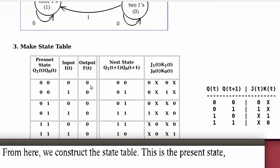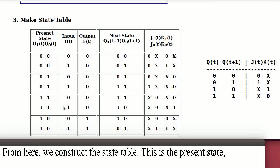The output only depends on the state, not the input. For state 11, the output is 0. For state 10, the output is 1. The next state depends on the input. So we set up the state table and now need to fill out the entries for J1(t), K1(t), J0(t), and K0(t).